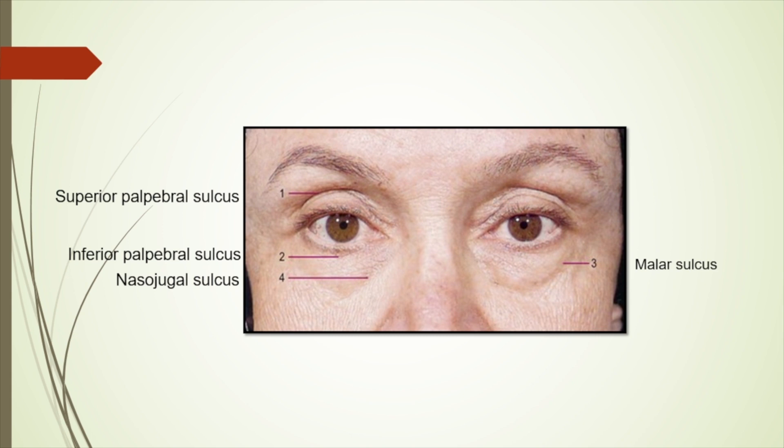There is a superior palpebral sulcus, which is present between the crease and the superior orbital margins. The inferior palpebral sulcus is present just inferior to the lower lid margin, then the nasojugal sulcus and the malar sulcus, which form the tear troughs.